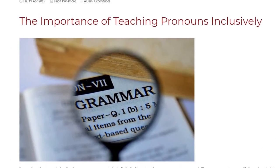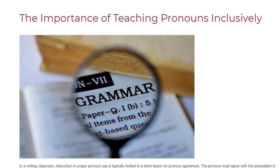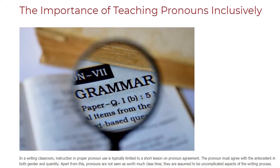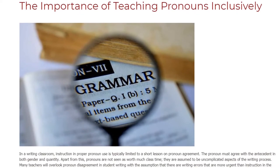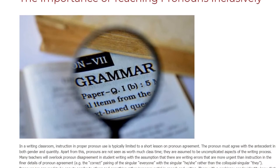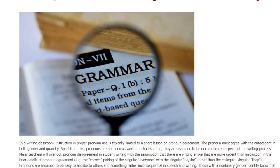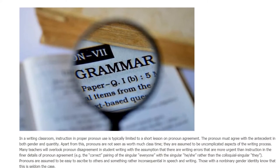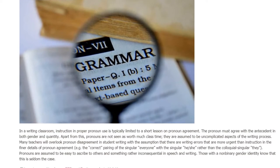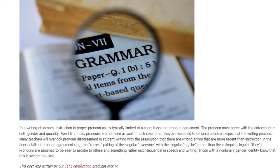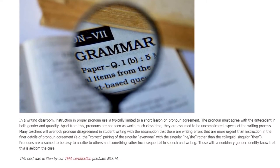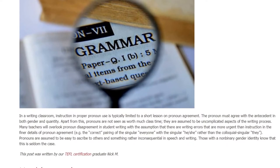In a writing classroom, instruction and proper pronoun use is typically limited to a short lesson on pronoun agreement: the pronoun must agree with the antecedent in both gender and quantity. Apart from this, pronouns are not seen as worth much class time. They are assumed to be uncomplicated aspects of the writing process. Many teachers will overlook pronoun disagreement in student writing, assuming there are more urgent writing errors than the finer details of pronoun agreement.